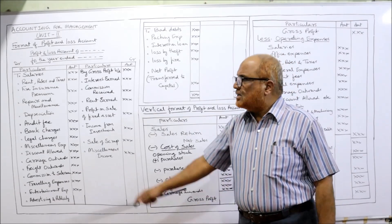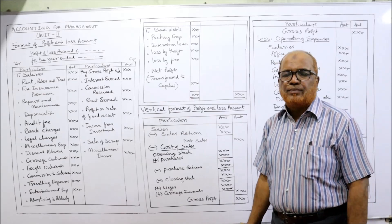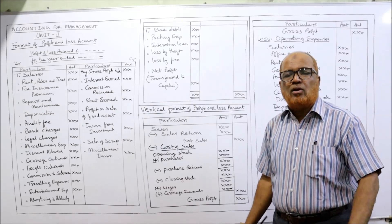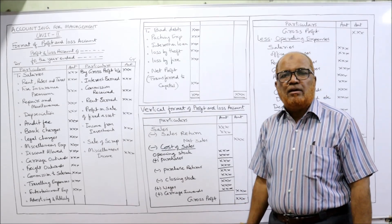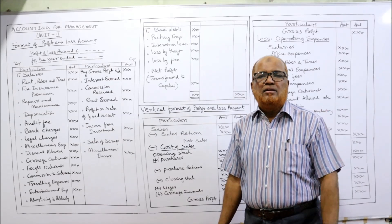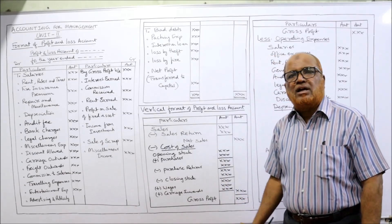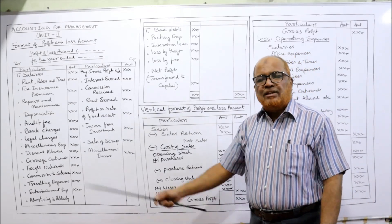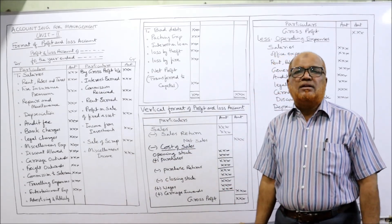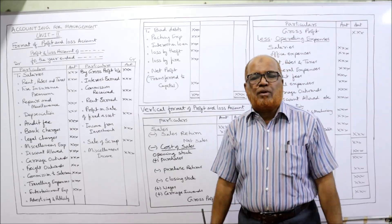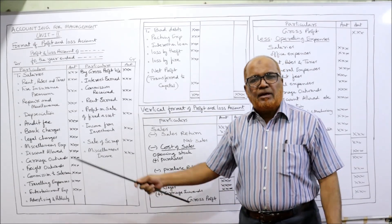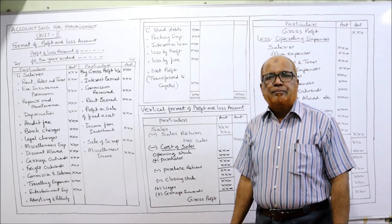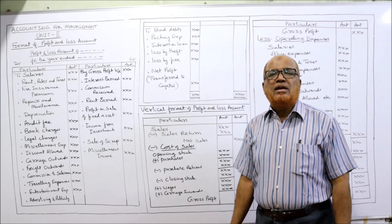This is the traditional horizontal format. Nowadays many businesses prefer the vertical format, and even the Companies Act specifies that the profit and loss statement should be prepared in a vertical format. Whether we make a horizontal or vertical format, the ultimate aim is to find out the net profit or net loss. The vertical format is more suitable and more convenient for making further analysis.